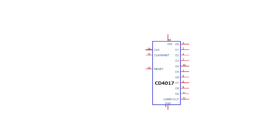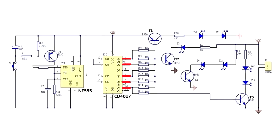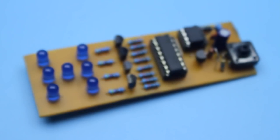In our case, only 5 outputs are involved. As soon as the logic 1 appears on the 6th output, the signal goes to the pin 15 and resets the counter to the initial state. Everything starts again.